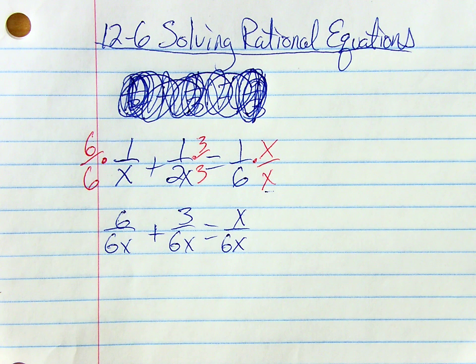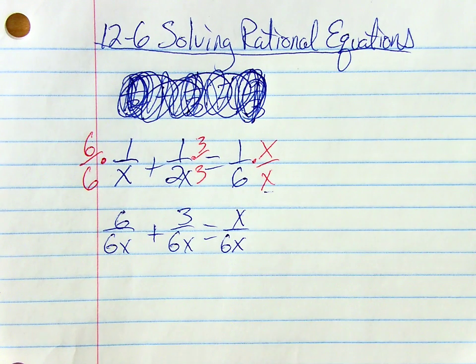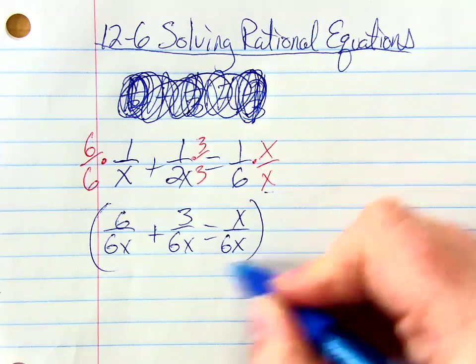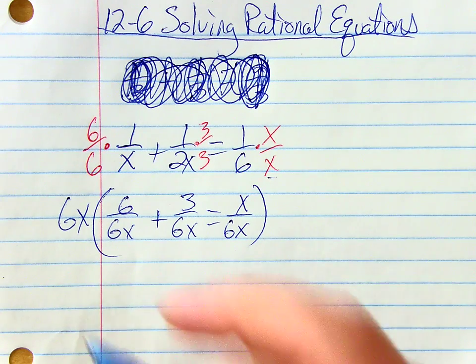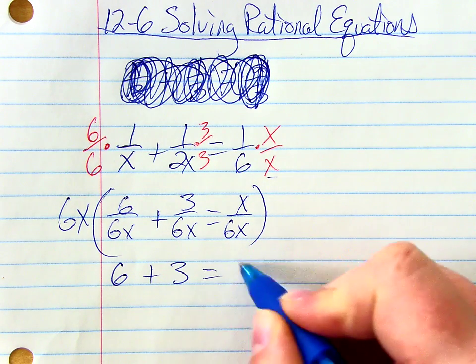Do you remember way back when, when we were doing, you might have even done this in part 1. If you want to get rid of all the fractions, wasn't that nice when we could just get rid of all the fractions? Look at my denominator, 6x, 6x, and 6x. If I want to clear all of those fractions, I can just multiply everybody by 6x. Multiply everybody by 6x. Look what happens. All those denominators cancel out. So you're just left with 6 plus 3 equals x.